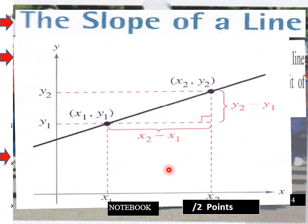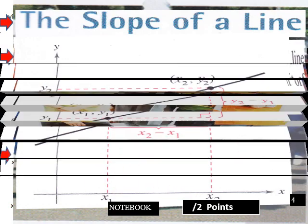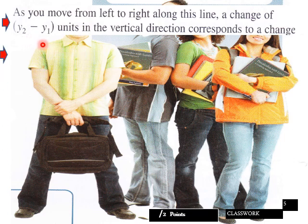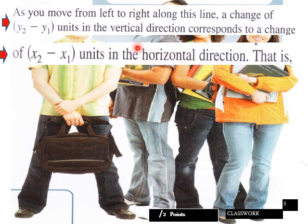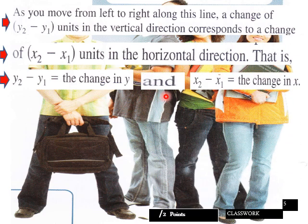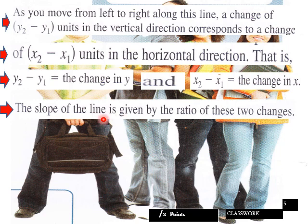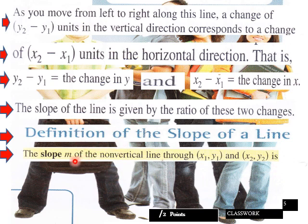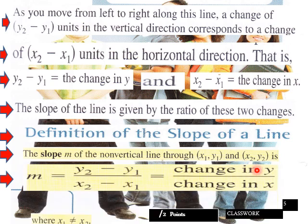So when I do notebook checks, I can see that you have slide number four lesson 1.1 jotted down in your notebook and make this quick sketch. As you move from left to right along this line, a change of Y2 minus Y1 units in the vertical corresponds to a change of X2 minus X1 units in the horizontal direction. That is Y2 minus Y1 equals change in Y, and X2 minus X1 equals change in X. Slope of the line is given by the ratio of these two changes. The definition of slope of the line is the slope M of non-vertical line through X1, Y1 and X2, Y2 is here is your formula for finding slope change in Y over change in X, where X1 cannot equal X2. If this is zero, then you have a vertical line.